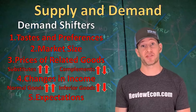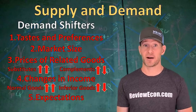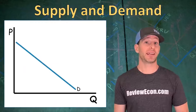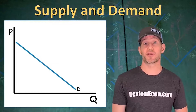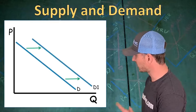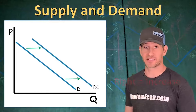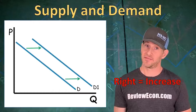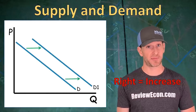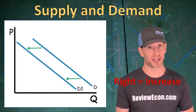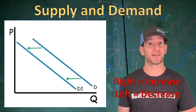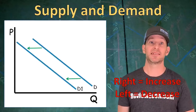The last demand shifter is expectations for the future — sometimes guesses about the future will impact how much people buy today. Remember: right is an increase, left is a decrease.